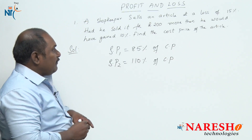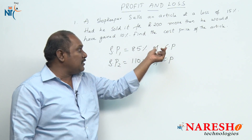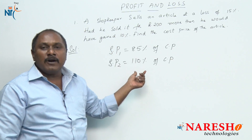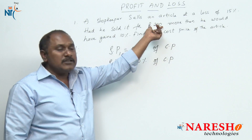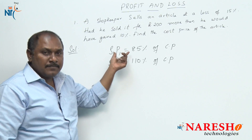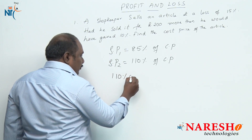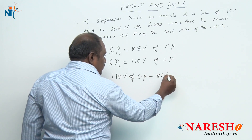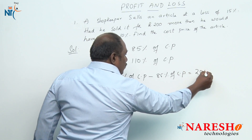Initially, when he makes a loss of 15 percent, the selling price is 85 percent of cost price. When he makes a profit of 10 percent, his selling price is 110 percent of cost price. So this 200 rupees is nothing but the difference in selling price. Therefore, 110 percent of cost price minus 85 percent of cost price equals 200.